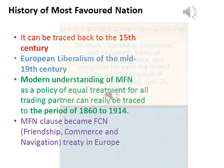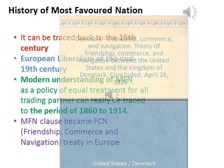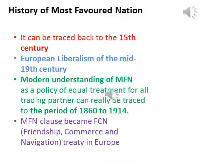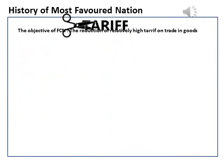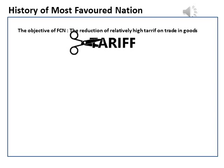It was during this time that the MFN clause became a prominent component of the series of Friendship, Commerce and Navigation treaties negotiated amongst the relatively equal powers in Europe. The FCN treaties had as their principal objective the reduction of relatively high tariff rates on trade in goods. As these treaties lasted only about 10 years on average, the pre-First World War period involved constant negotiations to set new levels of tariff bindings.